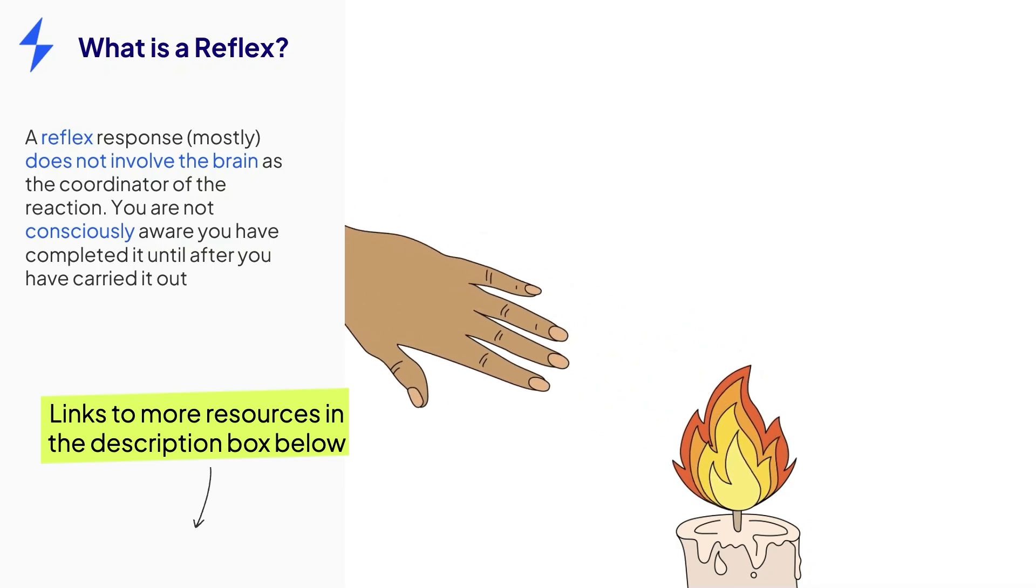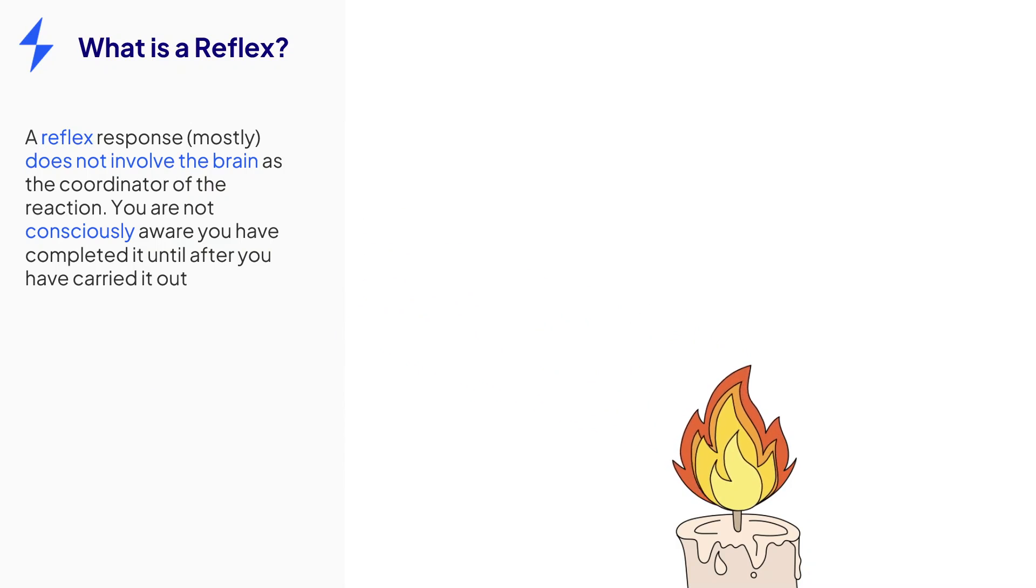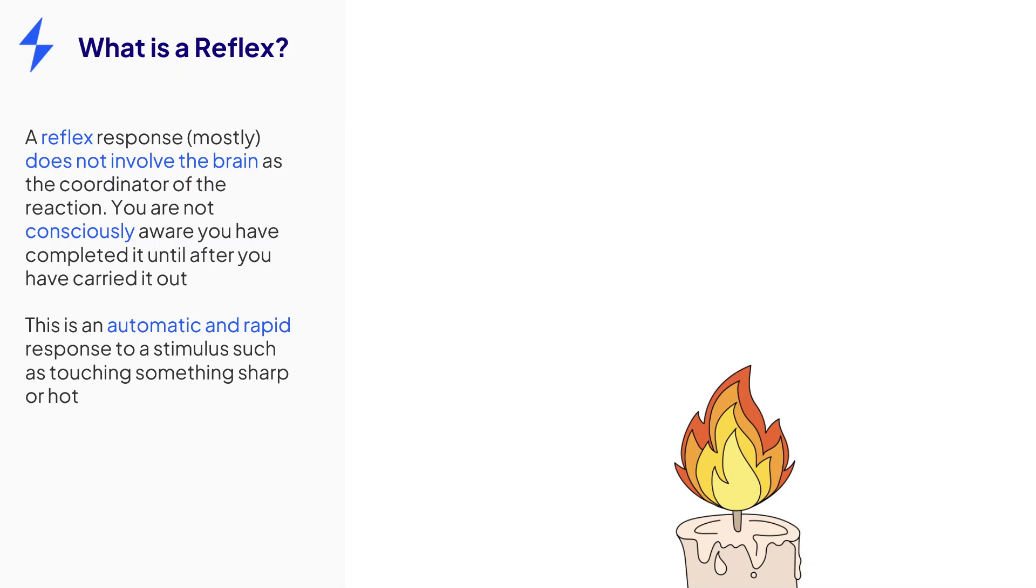Reflex actions are involuntary or automatic, meaning they happen without you consciously deciding to carry out the response. They are also very rapid. The most common purpose of a reflex is to protect the body from potential damage, such as touching a hot surface.